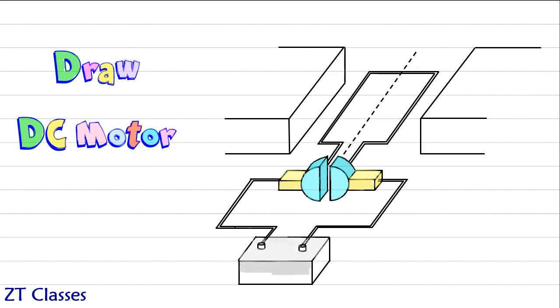This diagram looks almost complete, but there are still a few things missing. The first one that is missing is the switch, so let's draw a switch here.